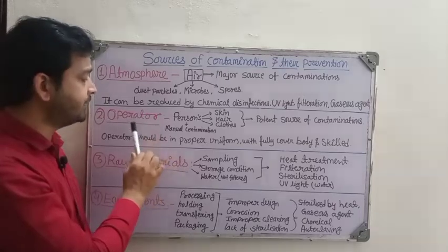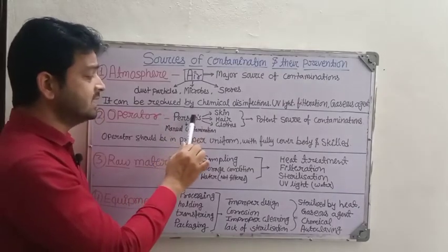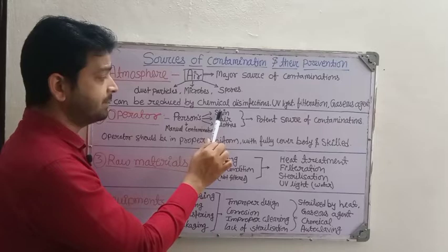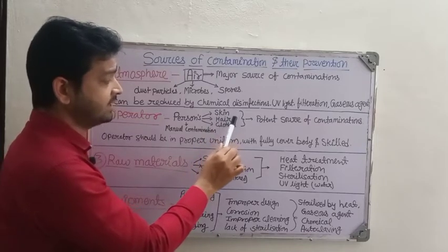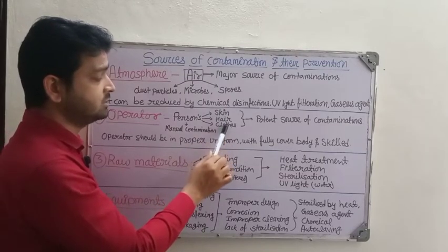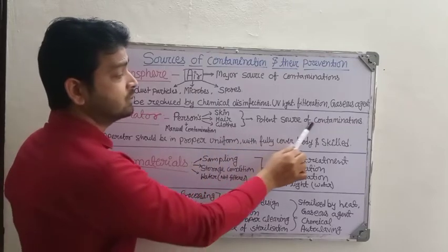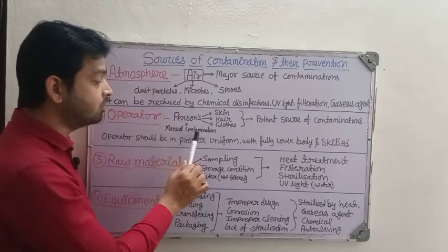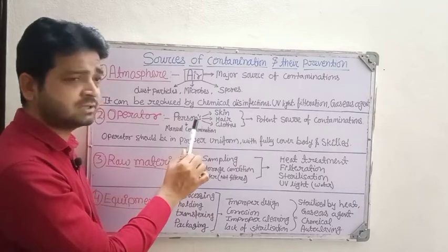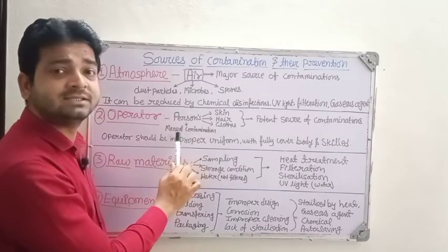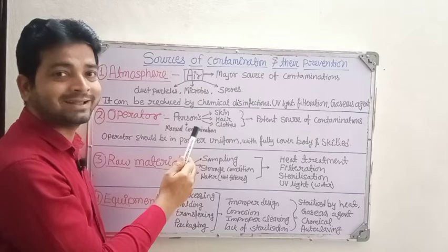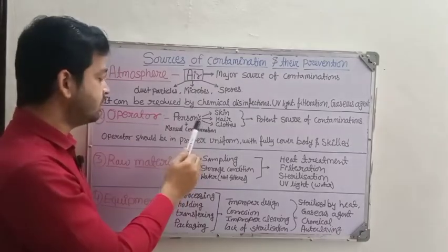The second source is the operator — the person operating may also be a source of contamination. For example, the person's skin, hair, and clothing may contain many types of microbes, dust particles, or different biological particles, which are a potent source of contamination. Also, manual contamination can occur if the person doing the transfer or inoculation is not a skilled person, increasing the chances of microbial contamination.